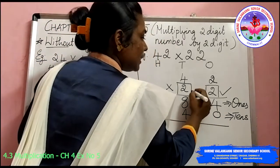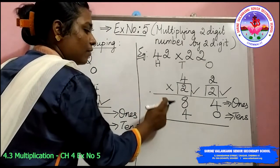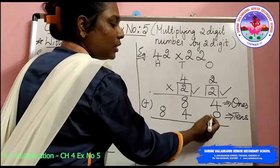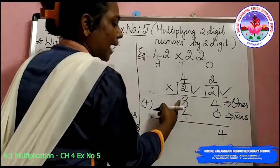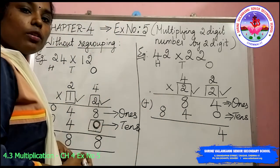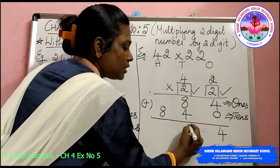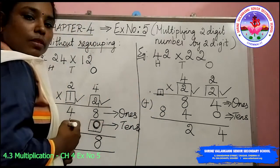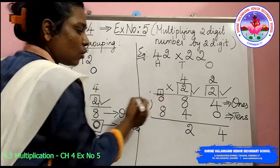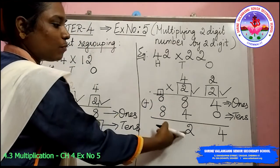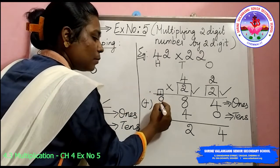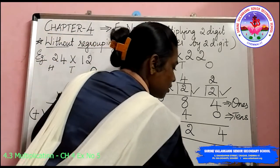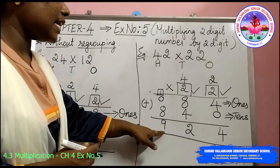Now we have completed the multiplication of ones place and tens place. We have to do addition, starting with the ones place. Four plus zero gives four. Eight plus four gives twelve. Since twelve is a two-digit number, two lies under ones place and one lies under tens — that one has to be carried forward. Since I don't have any value here I am giving zero. So one plus zero gives one from the carry forward, and then one plus eight gives nine. The answer after multiplying 42 into 22 is nine hundred and twenty-four.